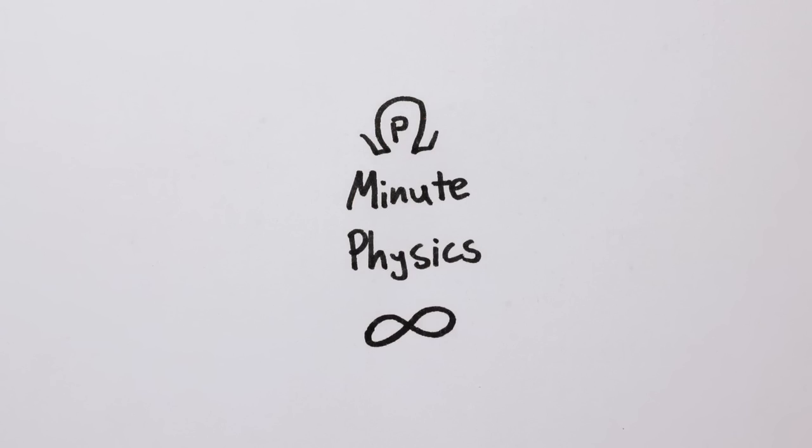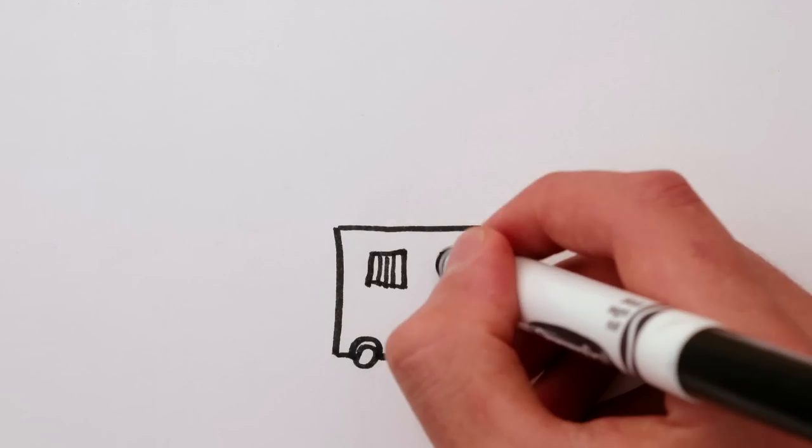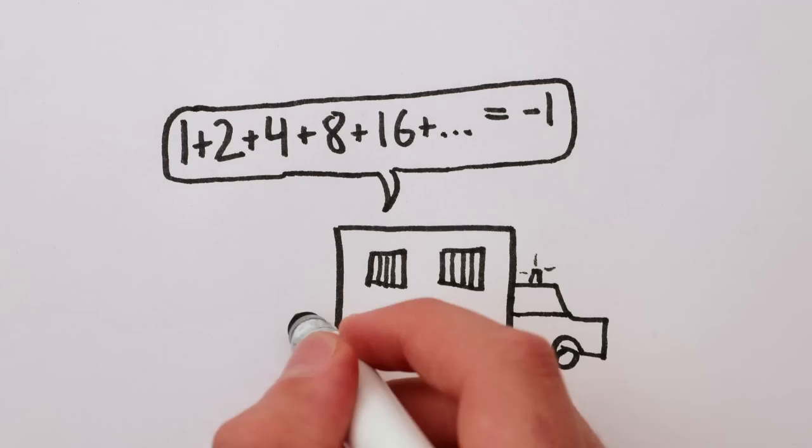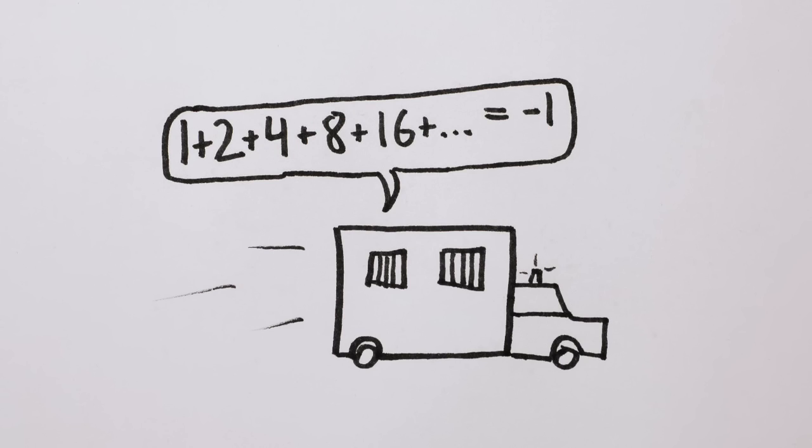There's been some discussion about the video where I claimed that 1 plus 2 plus 4 plus 8 plus 16 and so on is equal to negative 1. Apparently, I'm on my way to math jail.